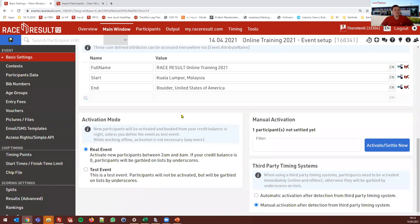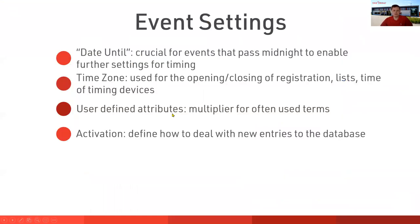That covers the basic event settings. To recap: 'date until' is crucial for events passing midnight to enable correct timing. Time zone must be set correctly as it's used for opening and closing of registration, publishing lists, and timing devices. User-defined attributes are a multiplier for reused terms. And the activation mode defines whether new entries deduct credits or are masked by underscores for testing.